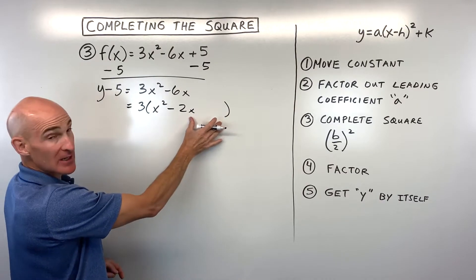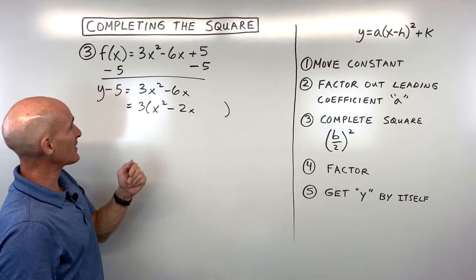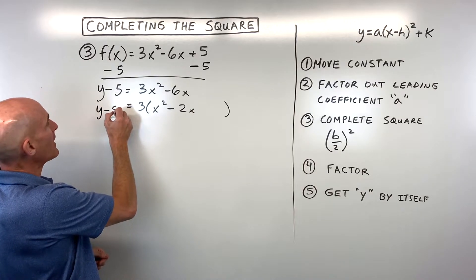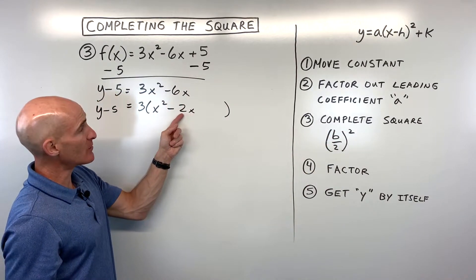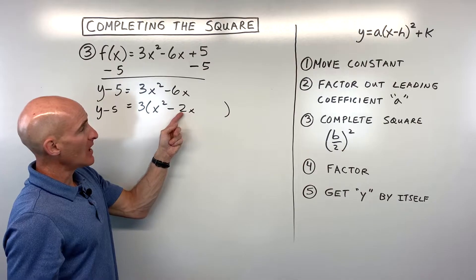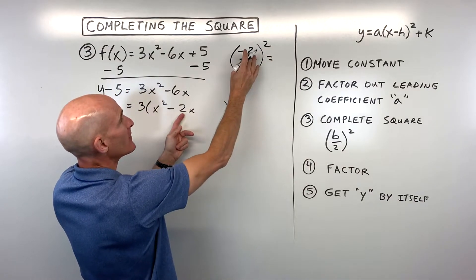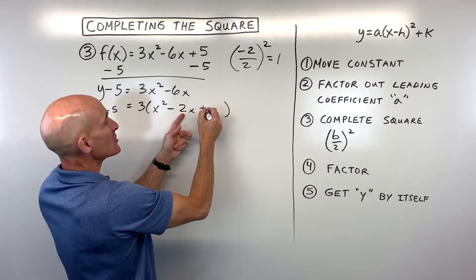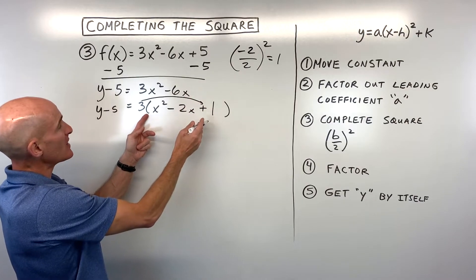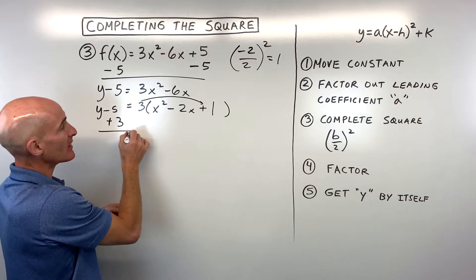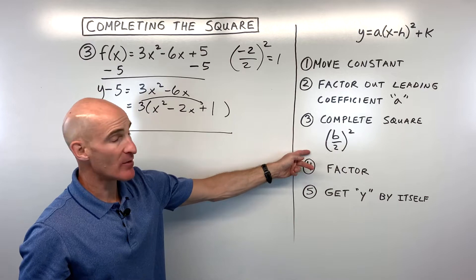Leave a little space for completing the square. Now complete the square: take b divided by two, the quantity squared. Our b value is negative two, so negative two divided by two squared is negative one squared, which equals one. This value is inside the parentheses and multiplied by three, so three times one is three. To keep things balanced we add three to the left side as well, giving y minus two equals three times the quantity x squared minus two x plus one.